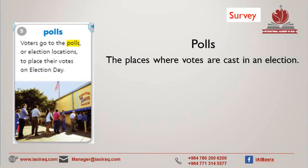The next word is polls. Voters go to the polls, or election locations, to place their votes on election day. Polls: the place where votes are cast in an election. As we were talking about previously, people above the age of 18 in most countries will go to a building and cast their votes. There are people in place to make sure no one is cheating, that each person only gets one vote so that the results of the polls are fair.